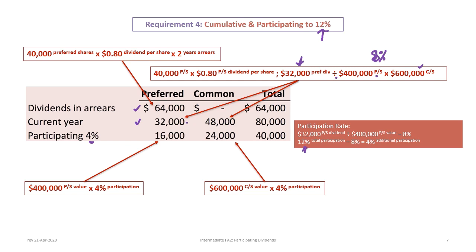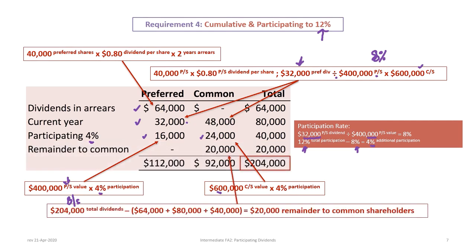Because the total participation of the preferred shares is up to 12%, the first 8% came from the current year dividend. So taking 12% minus 8% gives us 4% additional participation. That 4% applies to both preferred and common shareholders based on their relative share values: 4% of $400,000 preferred is $16,000, and 4% of $600,000 common is $24,000, giving a total additional participation of $40,000.